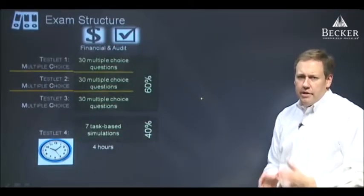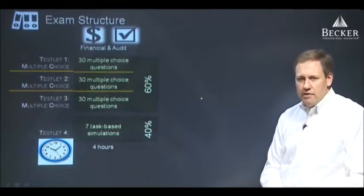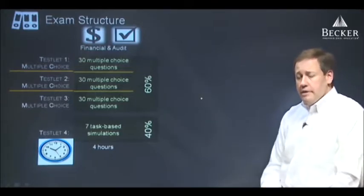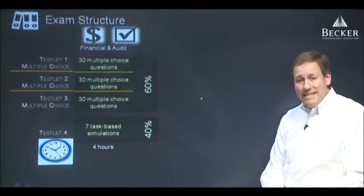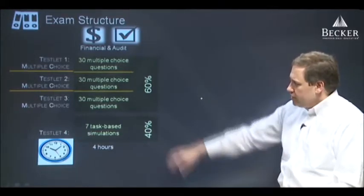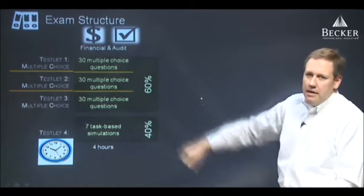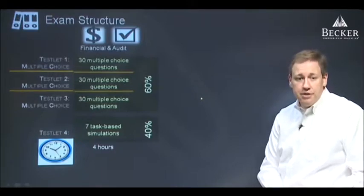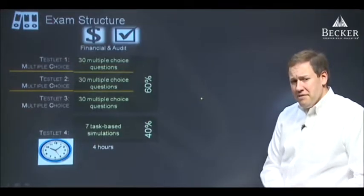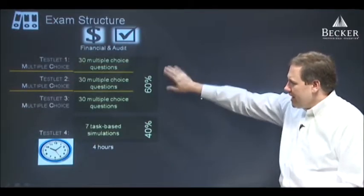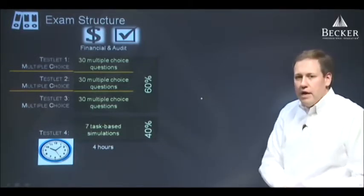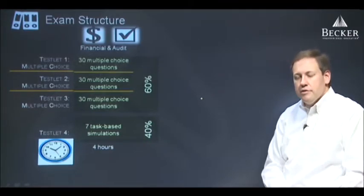I think it's really important that every instructor fully understand exactly how the CPA exam is built and exactly what goes into its structure. So we're going to start by taking a look at financial and audit. We can put them together because their structures are identical. The first thing that's important for you and your students to understand is they're made up of what are called testlets. The word testlet you will not find in any English dictionary — it's a word I believe was created by the AICPA. All it really means is the student effectively has to take four tests in sequence in order to complete the exam. That starts with three testlets comprised of 30 multiple choice questions each, or 90 questions in total.